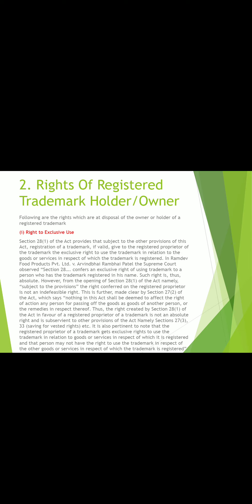The second right is the right of a registered trademark holder. There are six types: right to exclusive use; right to seek statutory remedy against an infringement; right of registered trademark holder of identical trademark; right to assign; right to seek correction of register; and lastly, right to alter a registered trademark. These six are the exclusive rights of registered trademark holder owners.